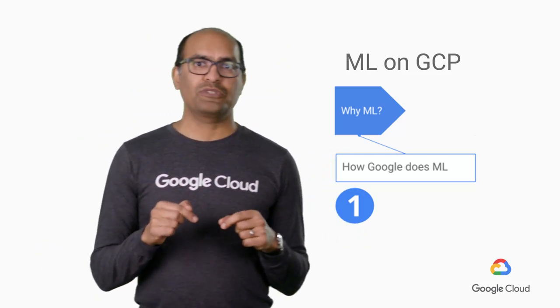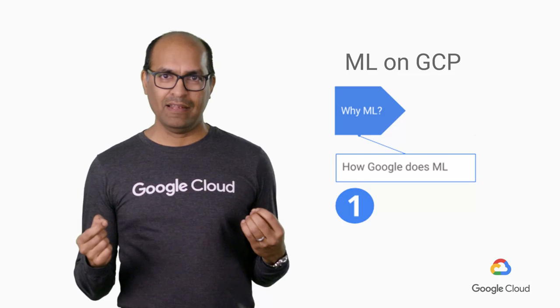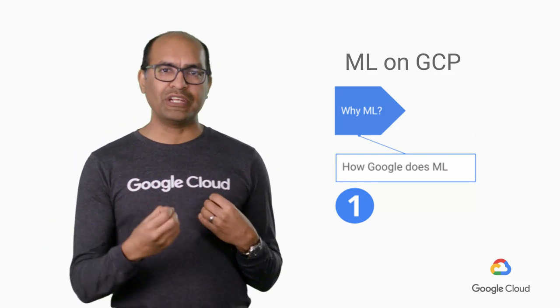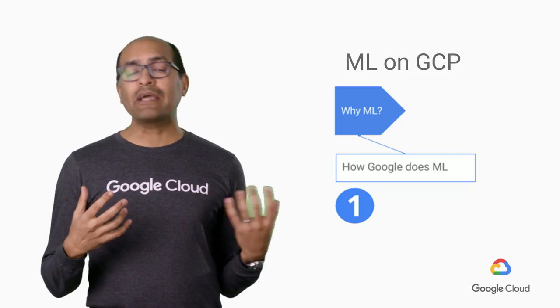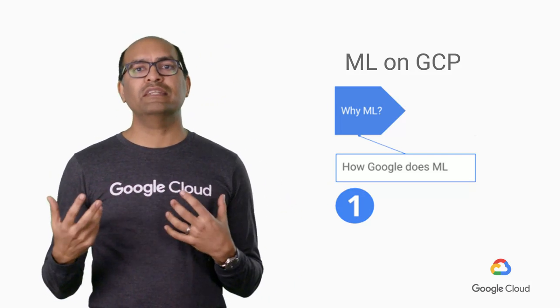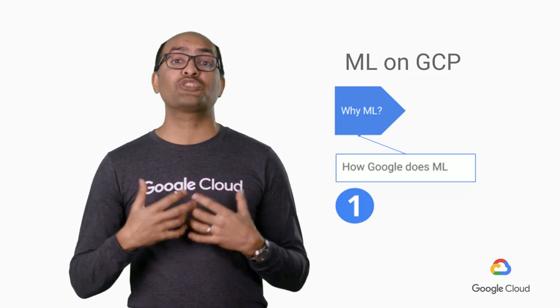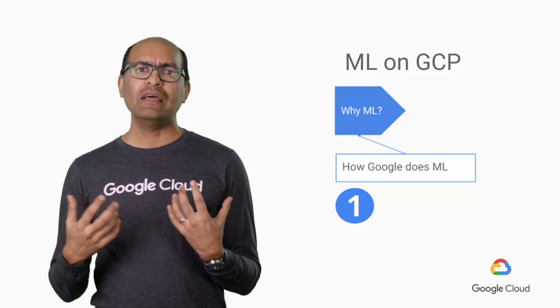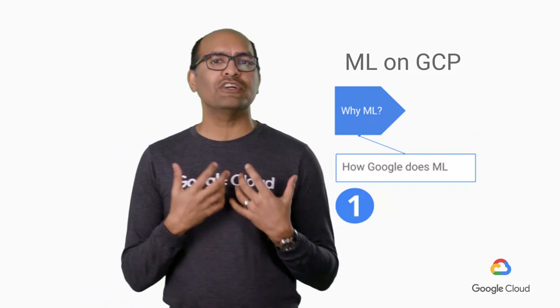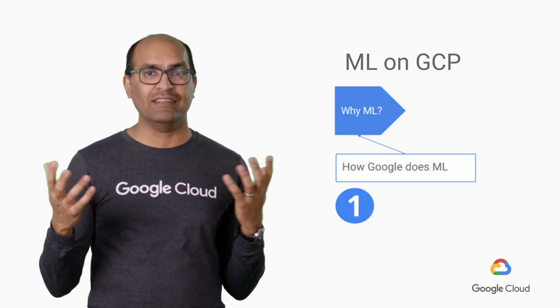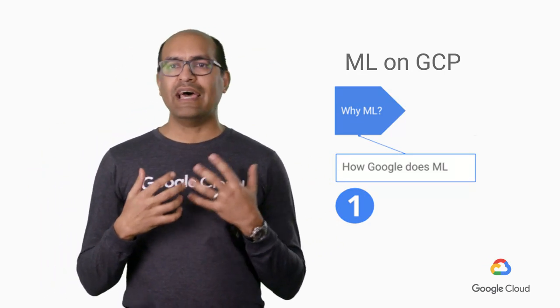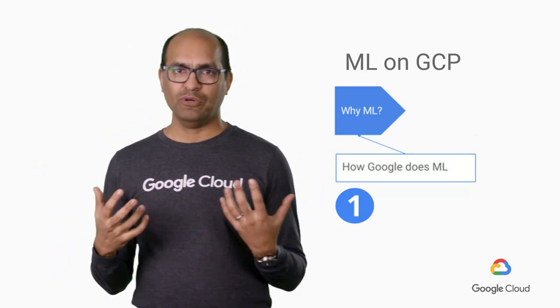We start the specialization with this course, How Google Does ML, where I introduce machine learning and what Google means when we say we are AI first. My colleague Josh then comes in to talk about the strategy of machine learning. We end with a discussion of tooling — how to do machine learning at scale using Python notebooks and serverless data processing components.